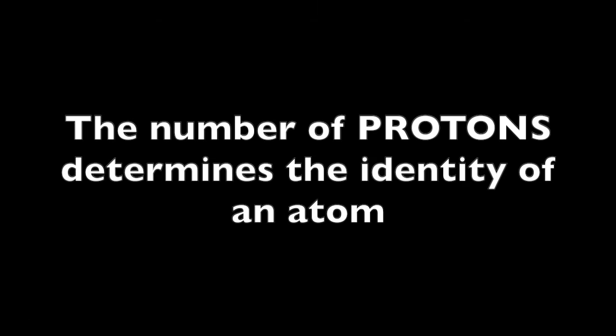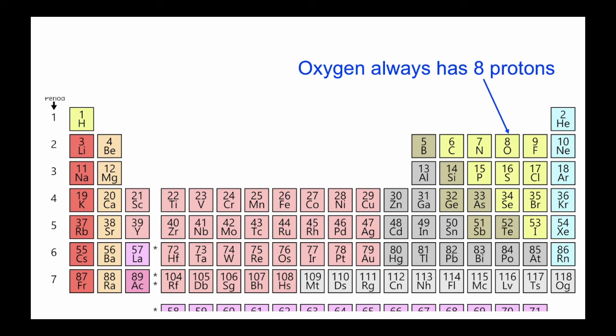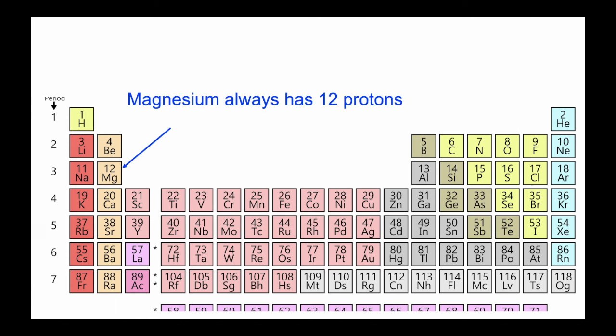The number of protons determines the identity of an atom. An oxygen atom always has eight protons. If it doesn't have eight protons, it's not oxygen. A magnesium atom always has 12 protons—never more, never less.